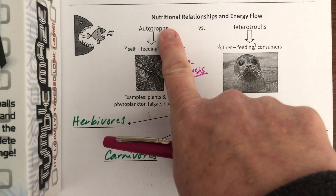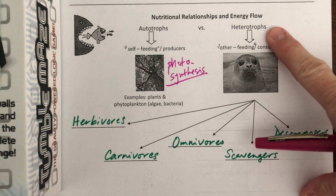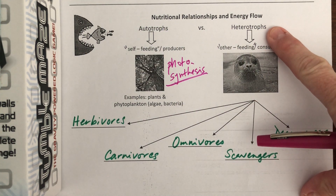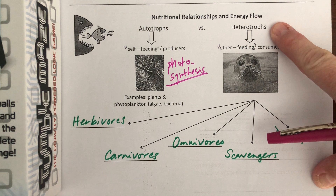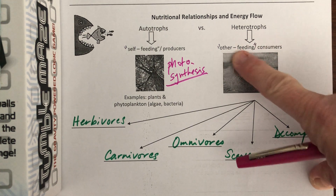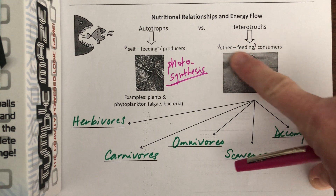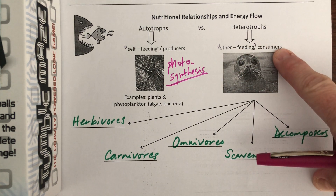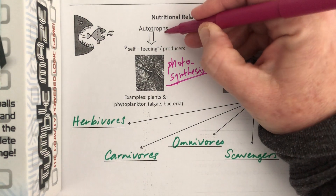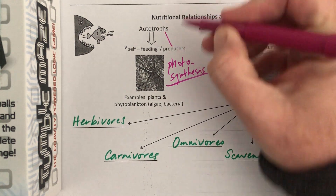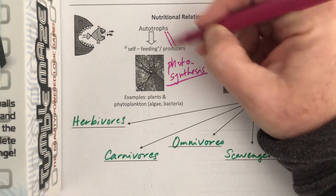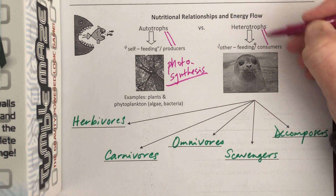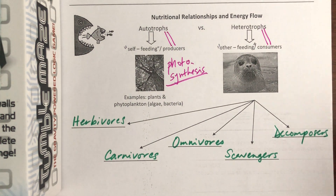The other type of organism on our planet — if you're not an autotroph, you're a heterotroph. What that means is you eat others, and so because of that, you're a consumer. I want you to understand that these two things mean the same thing: autotroph and producer, and heterotroph and consumer, mean the same thing.